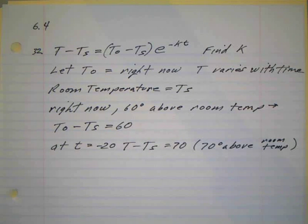And what we have is a temperature of an ingot of silver is 60 degrees centigrade above room temperature right now. 20 minutes ago it was 70 degrees centigrade above the room temperature.